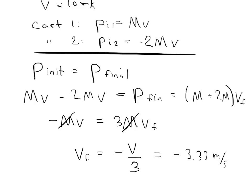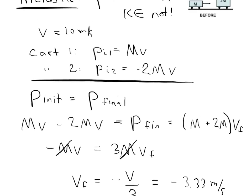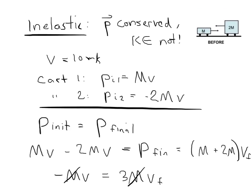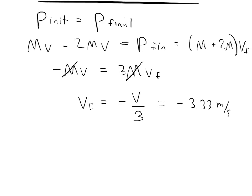This result makes sense. Looking at the picture, the two carts are going at the same speed, but the one on the right is bigger and moving to the left. So overall, you would expect the system to be moving to the left — and indeed, V_final is negative, confirming it moves to the left.